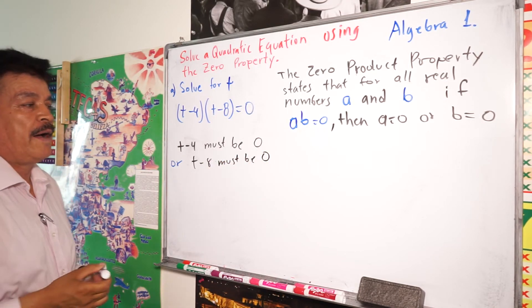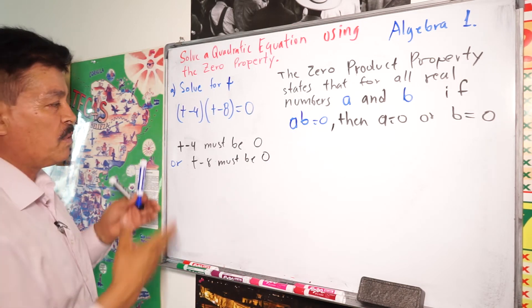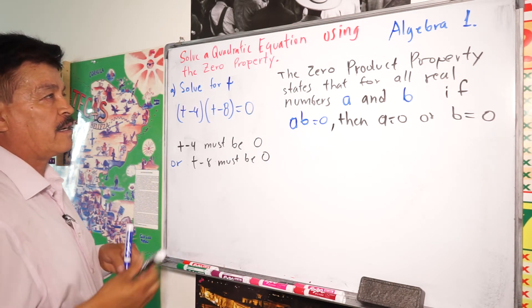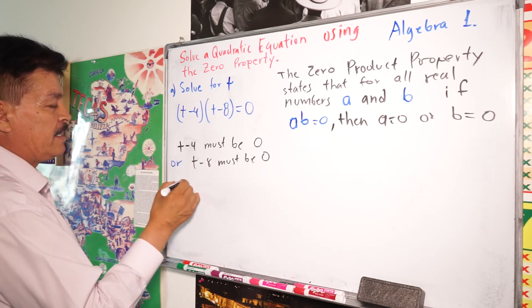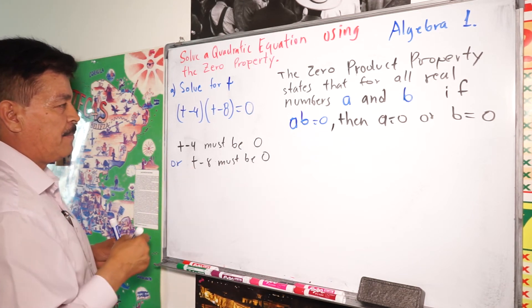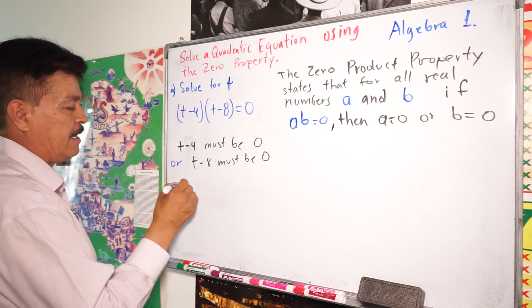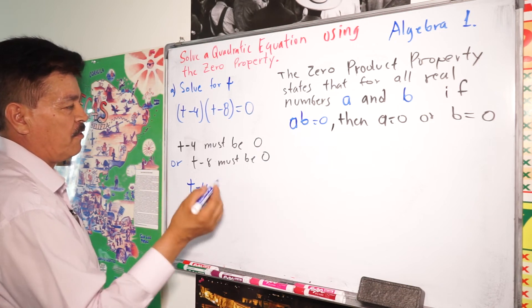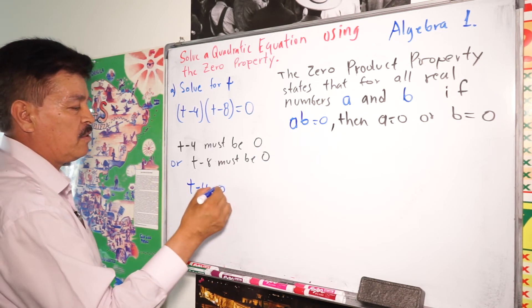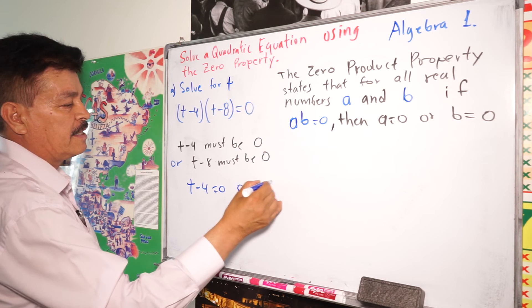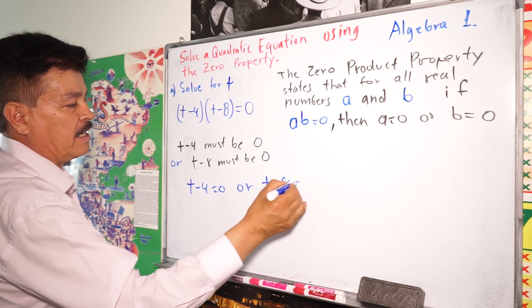So then you write the problem. It's very simple. You don't have to make a complex process. Just write it here. You have t-4 = 0, or t-8 = 0.